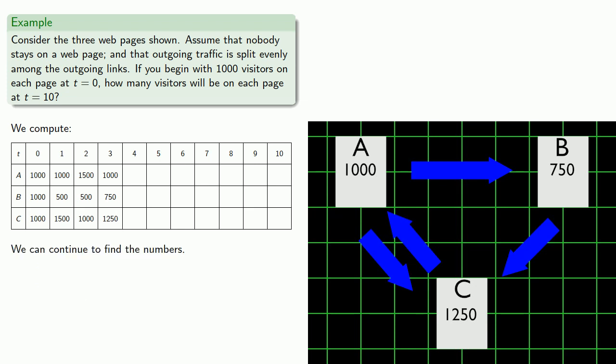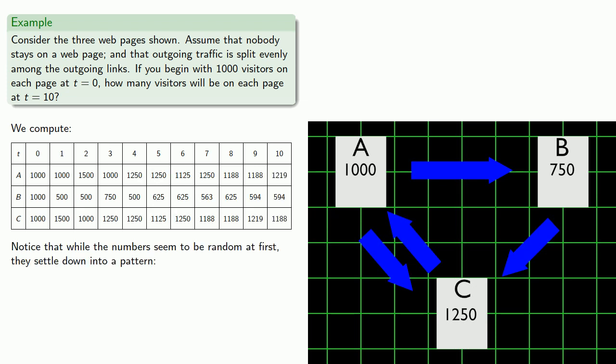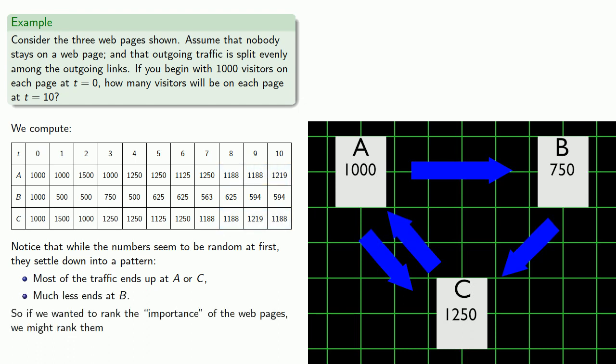And we can continue to find the numbers on the different websites. Notice that while the numbers seem to be random at first, they do settle down into a pattern. We see that most of the traffic ends up at A or C, and much less ends up at B. So if we wanted to rank the importance of the web pages, we might rank them: A is the most important because it ends up with the most traffic, followed by C, which has almost as much, with B at the end.